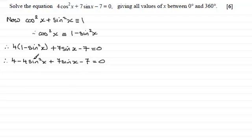If I do, I'm going to have this as 4 sine squared x, and then we'd have minus 7 sine x, and then minus 4 plus 7, which is going to be plus 3, and that will equal 0.